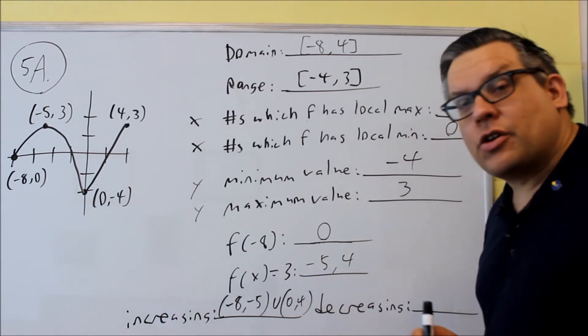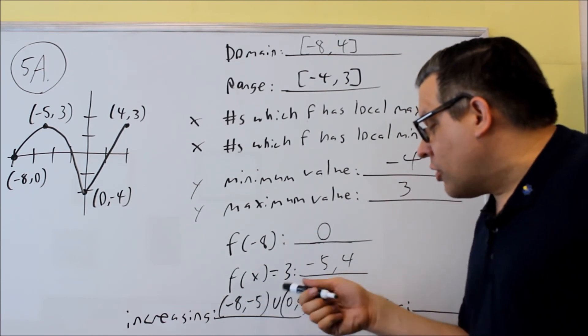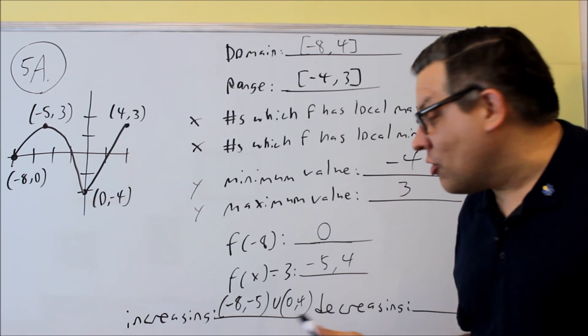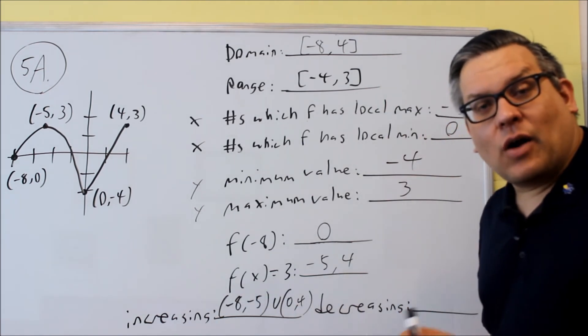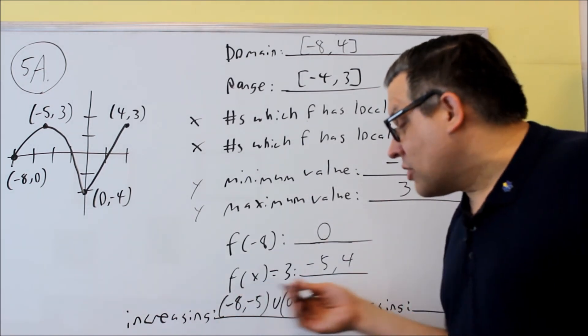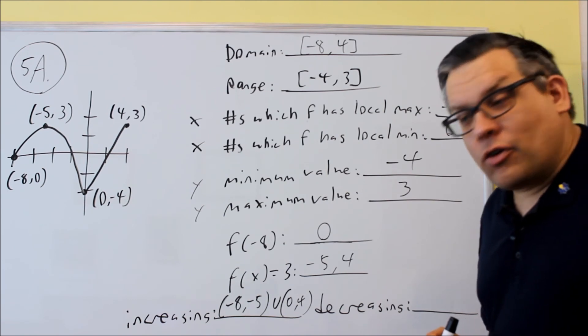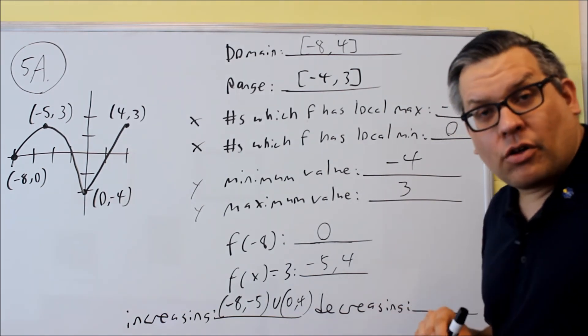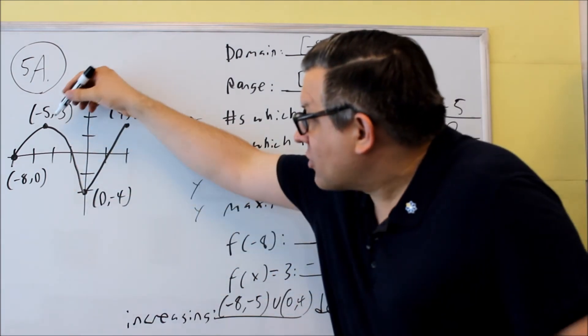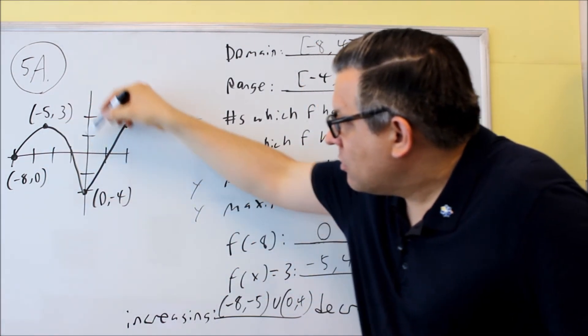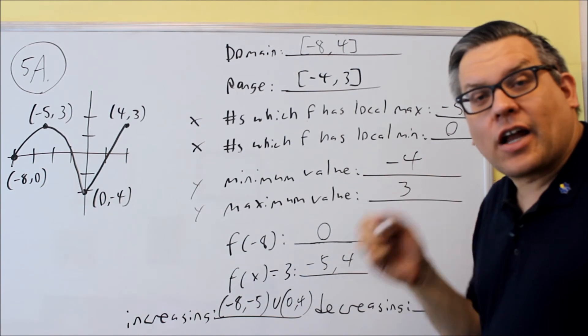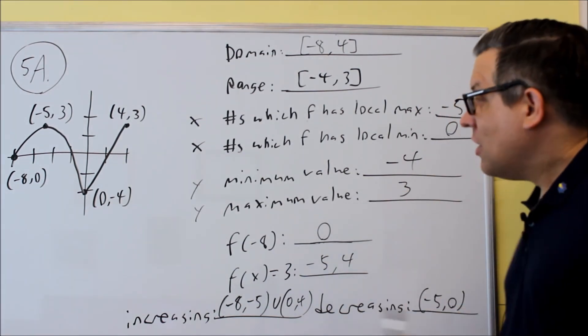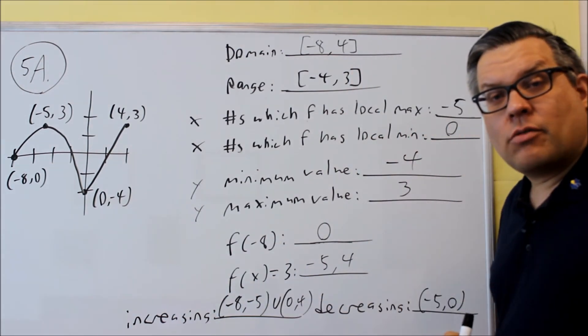I'm going to put a U there, union. So it's either in this region or this region, we see a section of the graph that's going uphill as I move from left to right. You can use parentheses whenever you're doing increasing, decreasing. Decreasing is you're looking for the part of the graph that's going downhill as I move from left to right. That's going to occur in this section right here. That's between negative 5 and 0. So negative 5 comma 0. Between those x values, that's where the graph is going downhill.